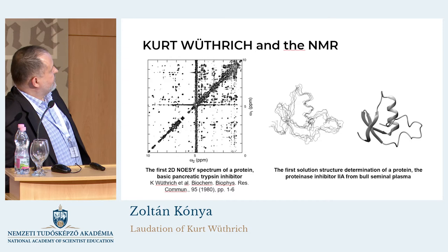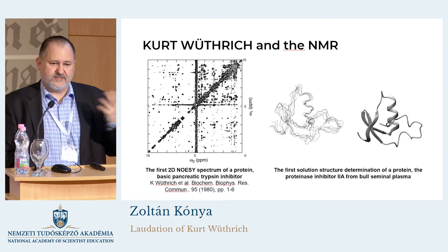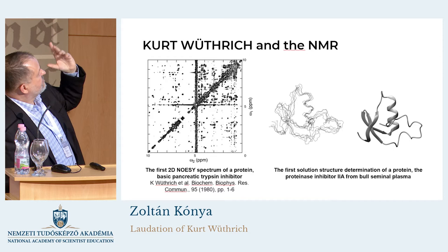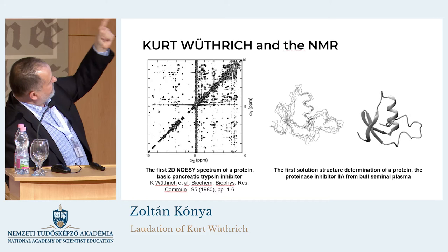This is the first 2D NOESY spectrum of a protein, made by Professor Wüthrich in 1980. You can see it is not easy to interpret this kind of NOESY spectrum. But actually, from this spectrum you can determine the 3D structure shown on the right-hand side — a protein inhibitor 2A from bull seminal plasma. It's not easy, but it can be done.